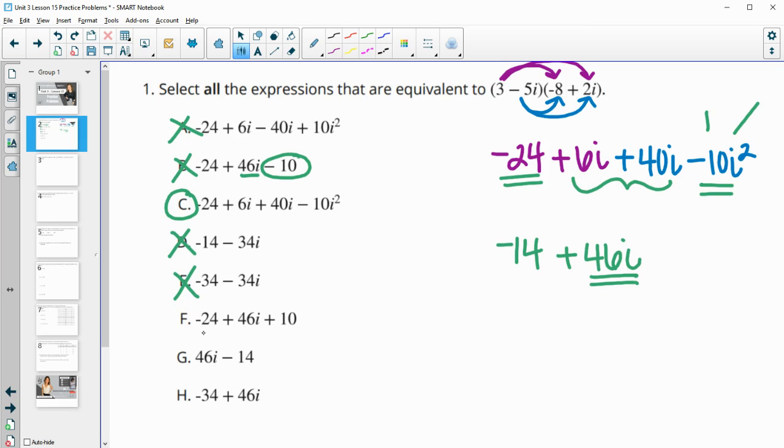F has our negative 24, which is good. It has our 46i, which is what these simplify to. So that's good. And then it has the plus 10, which is what this simplifies to when we simplify out the i squared. So F is good.